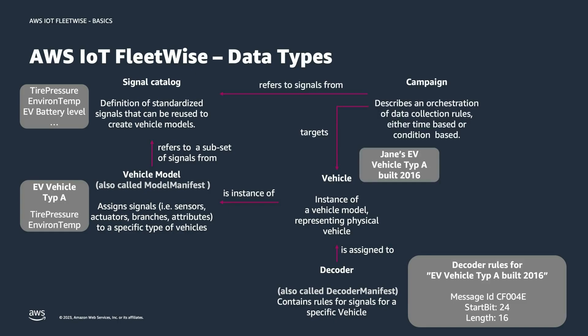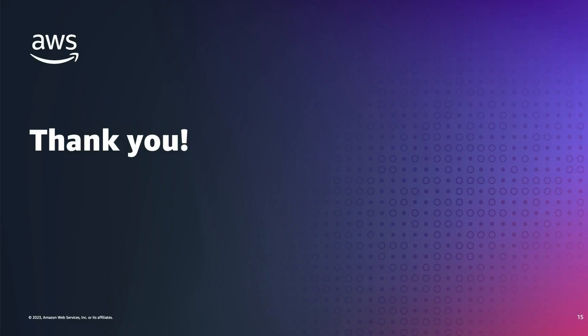Next is the campaign. What we've described so far is more or less a static definition of the fleet with individual vehicles. The campaign is the element that defines the data collection rules — time-based or condition-based collection — which ties to a vehicle itself and also to the signal catalog, specifying which signals are being collected. A campaign can also target a whole fleet where multiple vehicles, including heterogeneous vehicles, can be part of it, and you specify which signals you want for that entire fleet.